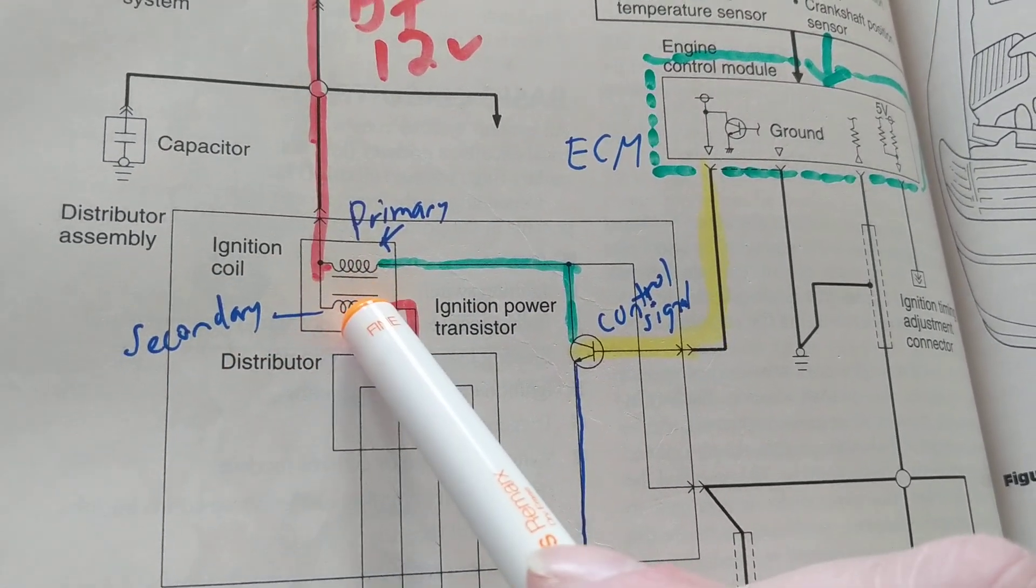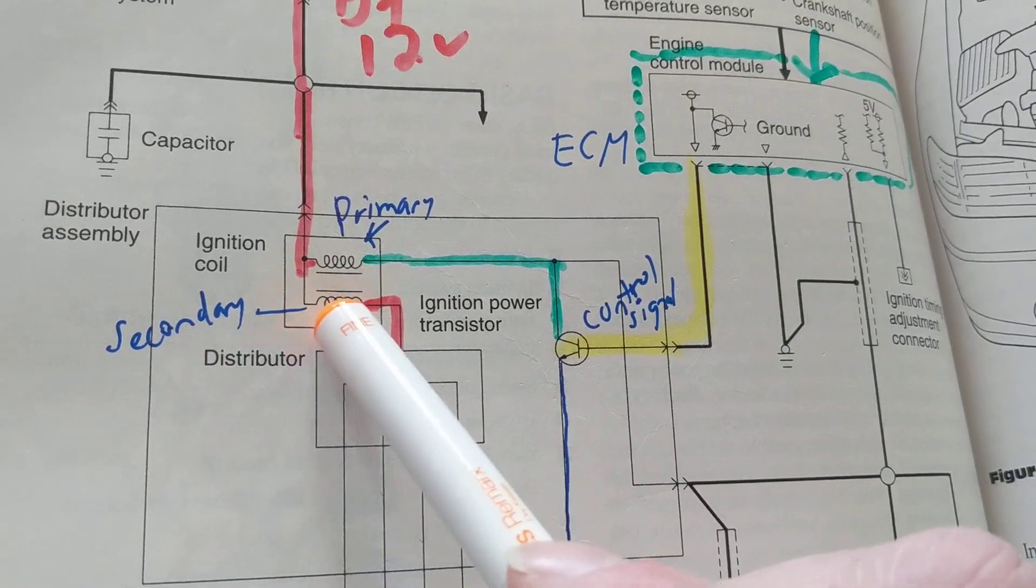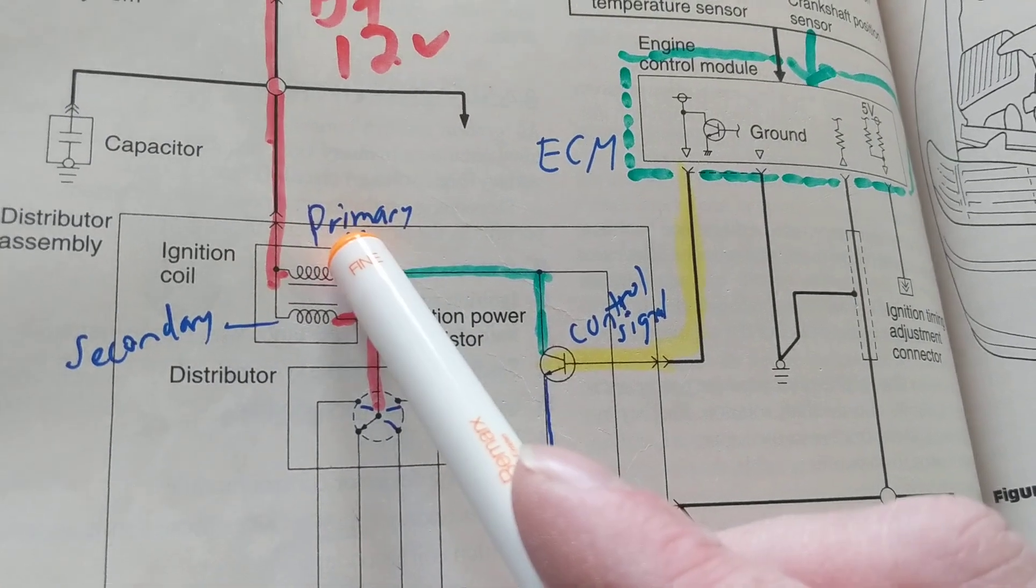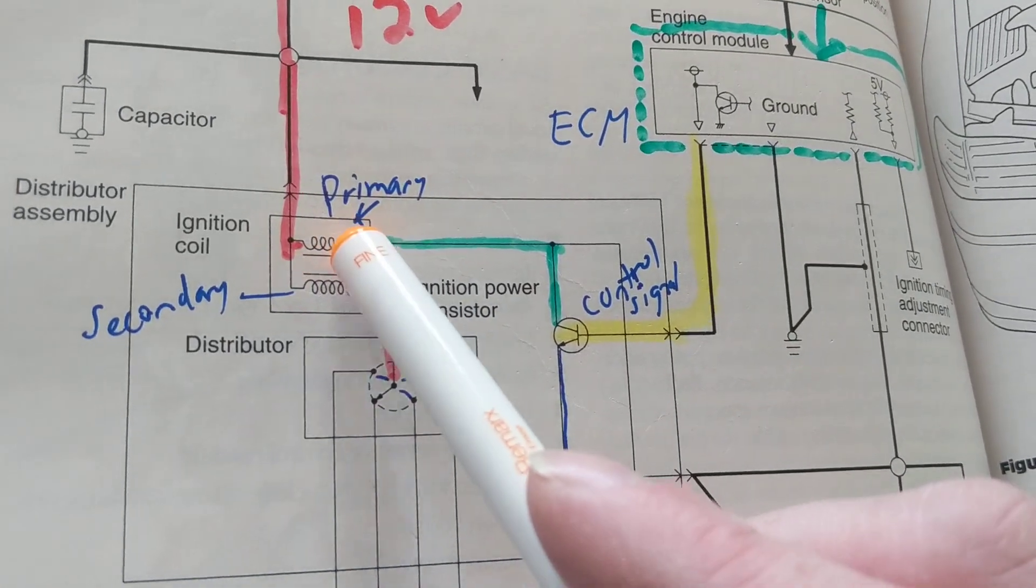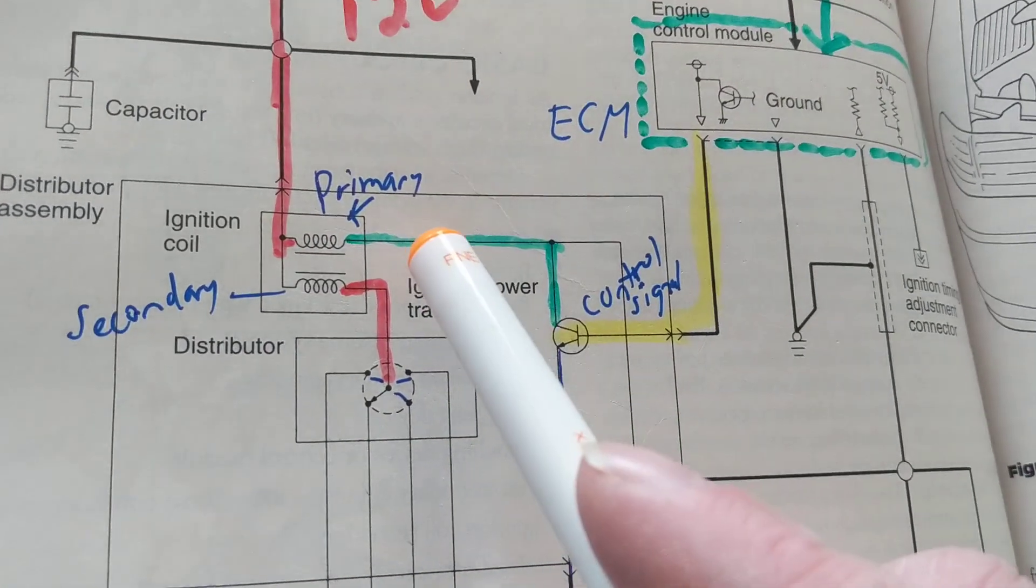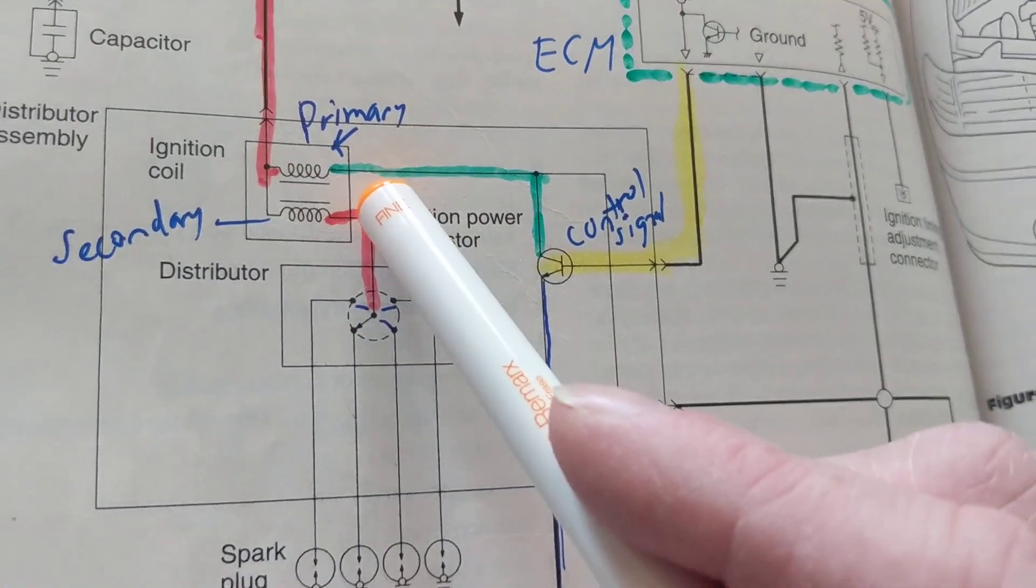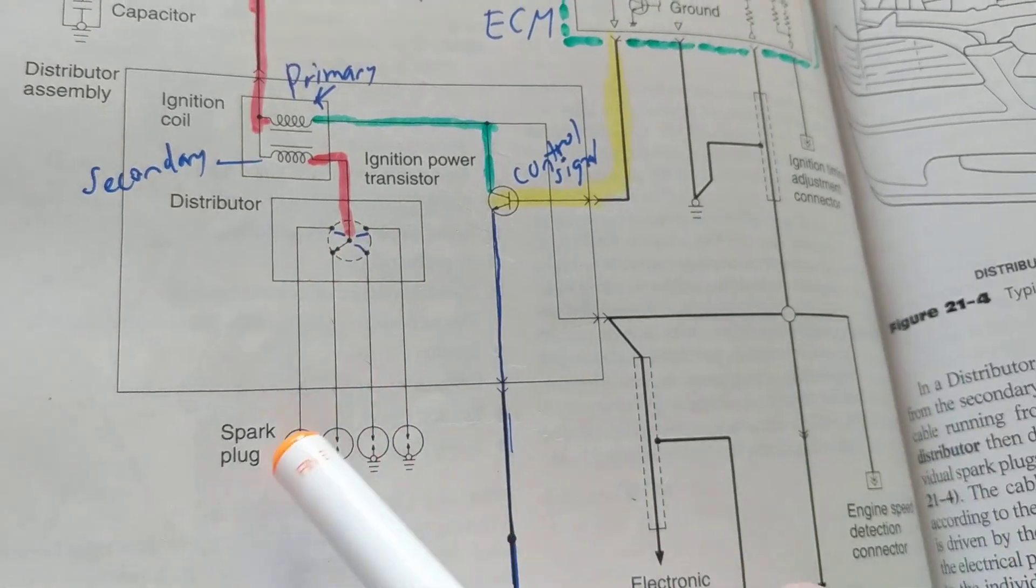This is the secondary winding. These secondary windings have much more windings on them than the primary. That allows a stepped-up voltage to be taken from this secondary and applied to the distributor, to each spark plug cylinder.